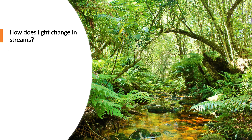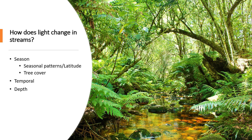Think about this question: how does light change in streams? Seasonally it is related to plant cover and latitude. Temporally there's something about depth, altitude, turbidity, and organismal manipulation. All these things will alter light in streams.